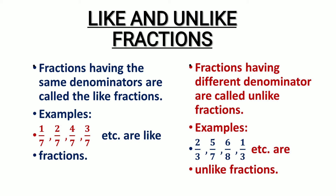Fractions having the same denominators are called like fractions. As you can see the examples — one upon seven, two upon seven, four upon seven, and three upon seven — all these fractions have the same denominators, so they are known as like fractions. While fractions having different denominators are called unlike fractions — for example, two upon three, five upon seven, six upon eight, one upon three, and so on.